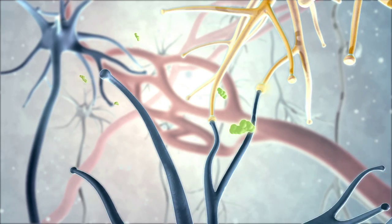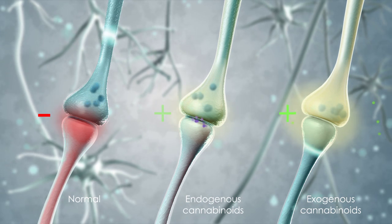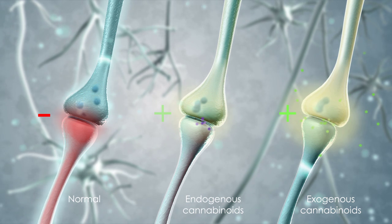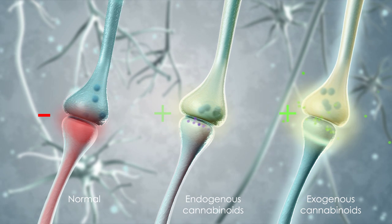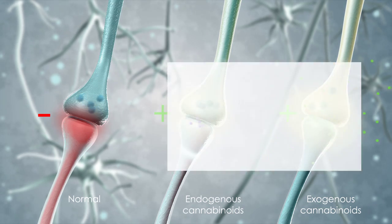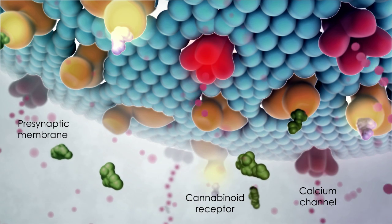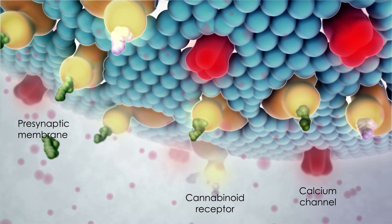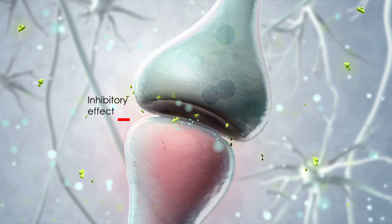Exogenous cannabinoids exert their modulatory effects upon the abundant cannabinoid receptors distributed throughout the CNS. The effects of cannabinoids may be illustrated by comparing three neuronal synapses showing normal pain transmission, the influence of endogenous cannabinoids, and the influence of exogenous cannabinoid administration. Exogenous cannabinoids from the bloodstream bind to cannabinoid receptors on the presynaptic neuron and mimic the endogenous synaptic modulatory effect by decreasing influx of calcium ions. In this way, pain and other neural processes are modulated.